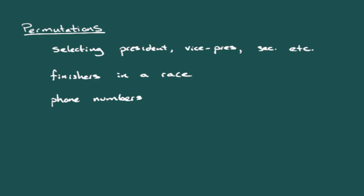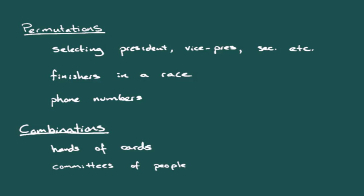When it comes to combinations where order doesn't matter, think about being dealt hands of cards. After dealing is done, you don't care which card was first or second — you only care what cards you have. Hands of cards are an example of combinations. Similarly, selecting committees: you're not assigning roles like president or secretary, just a three-person committee. Once you're on the committee, the order in which someone was added doesn't matter. Selecting committees is an example where order doesn't matter.